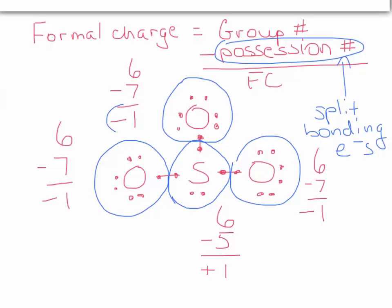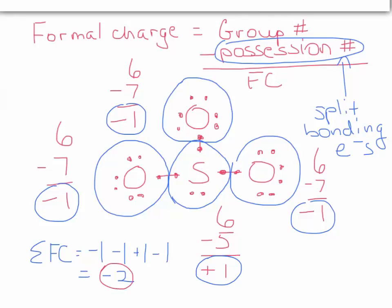Formal charge is sort of a way of letting you know where the charge lies on the molecule. And one last interesting thing about formal charge. If I add up the sum of the formal charges, that would be minus one, minus one, plus one, minus one. What does that add up to? Minus two. What is minus two the charge of? Why I think it is the charge on the sulfite ion. And that is indeed what formal charge is intended to add up to, the charge on the ion.